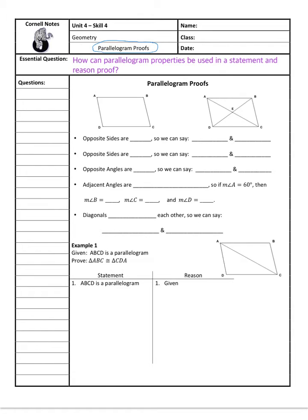At this point, if you watched the last video with me, we focused on how to write a traditional T-chart statement and reason proof using our basic vocabulary. But now we're going to build upon that and say, okay, what if we know something's a parallelogram? How could that help us in a statement and reason proof? So before we jump into a proof, we're going to start by talking about some characteristics that are important and why they would be helpful in a proof.